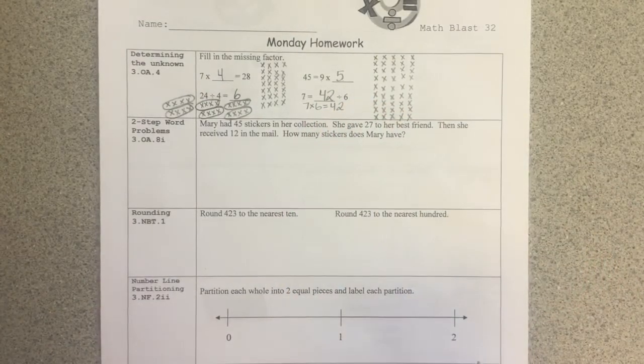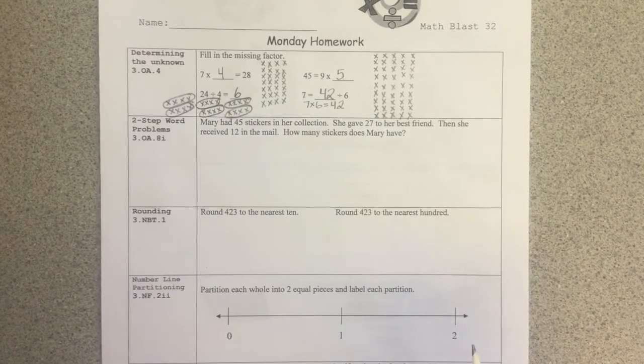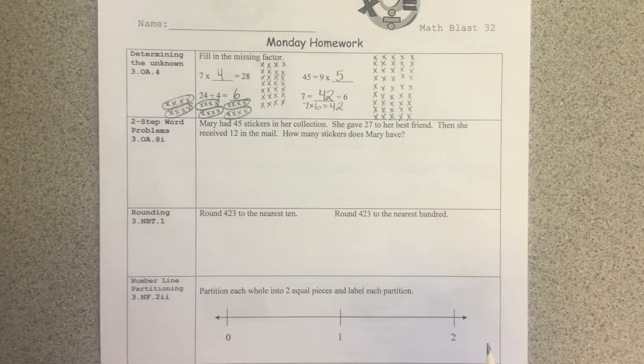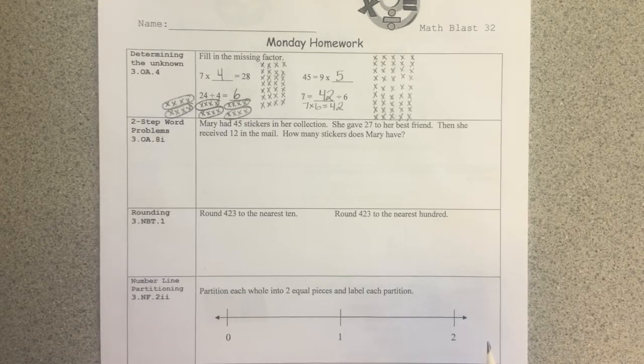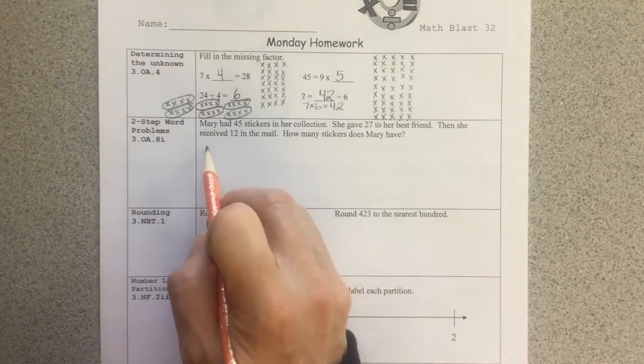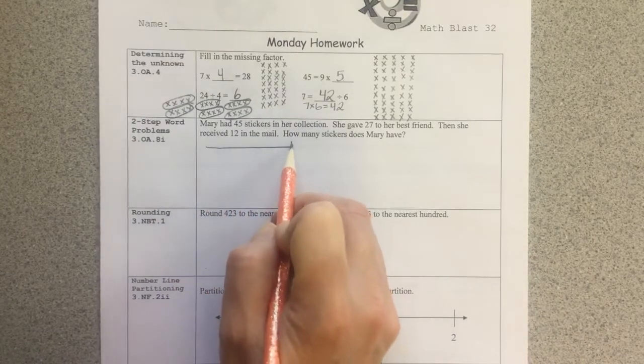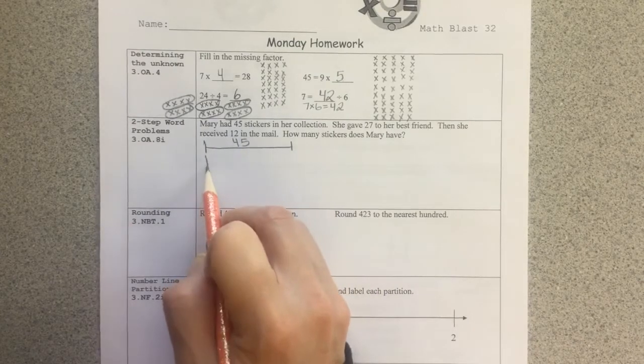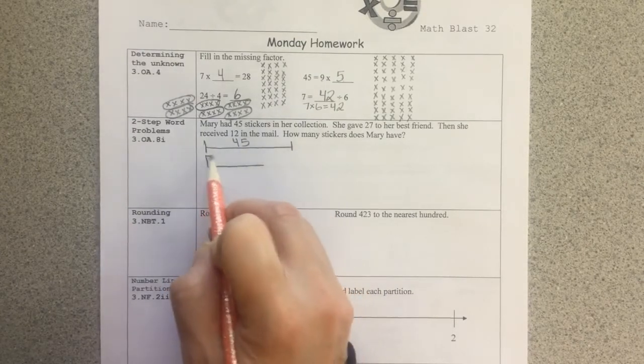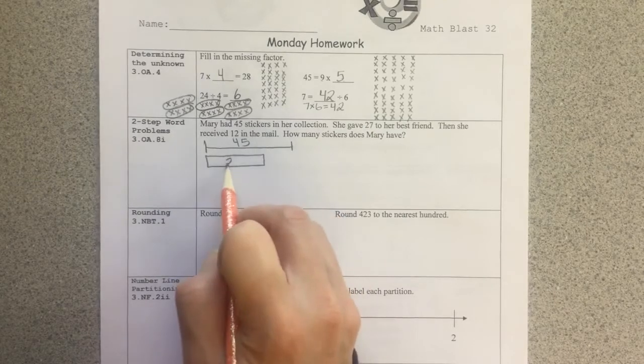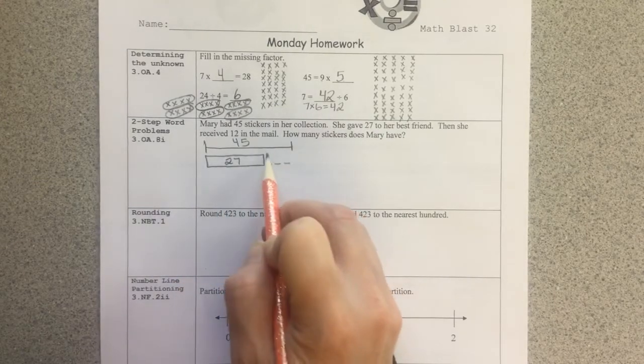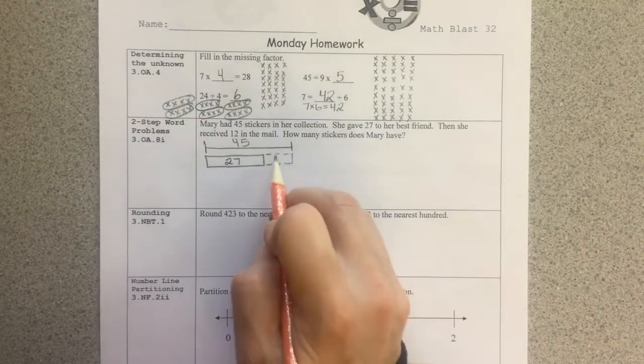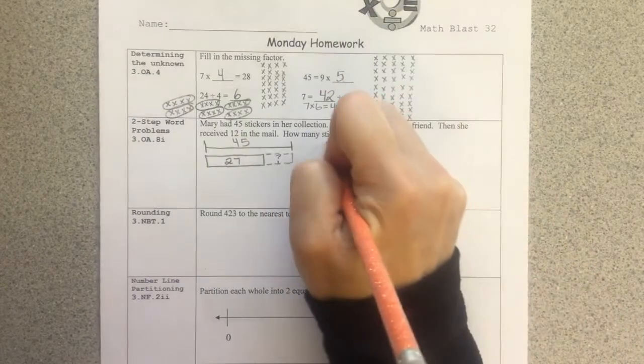Two-step word problems. Mary had 45 stickers in her collection. She gave 27 to her best friend. Then she received 12 in the mail. How many stickers does Mary have? Well, for the first step, I know the total number of stickers is 45. Mary gave 27 of those to her friend, which means this is what Mary had left.